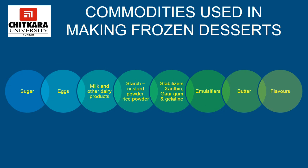Commodities used in making frozen desserts include sugar, eggs, milk and other dairy products, starch such as custard powder or rice powder, stabilizers such as xanthan, guar gum, and gelatin, emulsifiers, butter, and flavors. Stabilizers are natural and chemical ingredients that prevent ice cream from melting away rapidly. Emulsifiers are natural and chemical ingredients used to help frozen desserts attain a smooth and creamy texture and retain homogeneity. Xanthan is a type of polysaccharide made by fermenting glucose or sucrose with bacteria. Guar gum is obtained from the endosperm of guar beans and is used as a stabilizer.